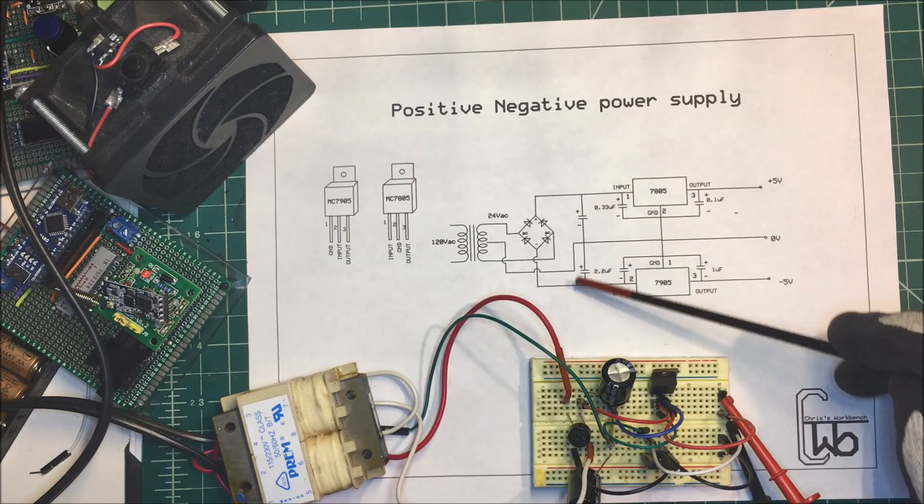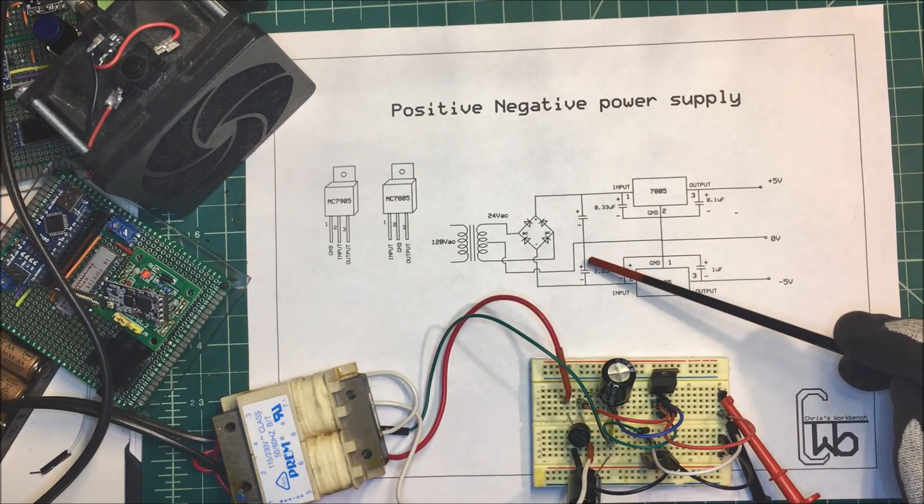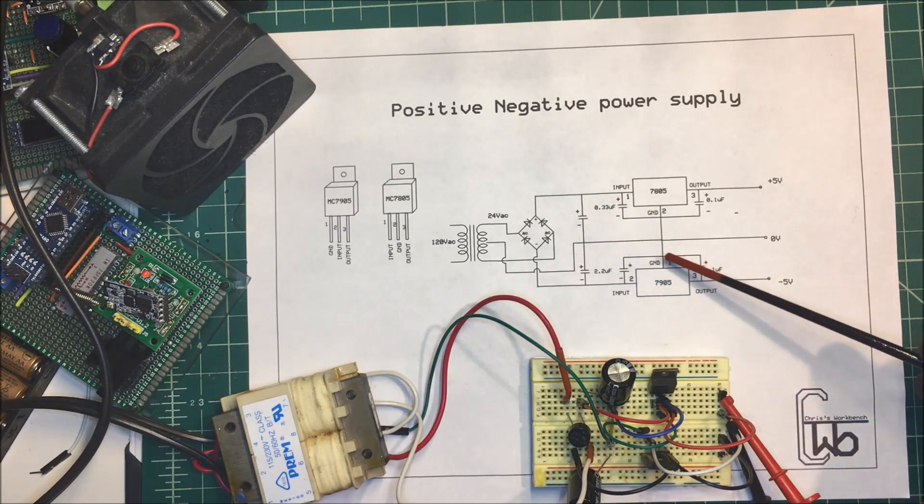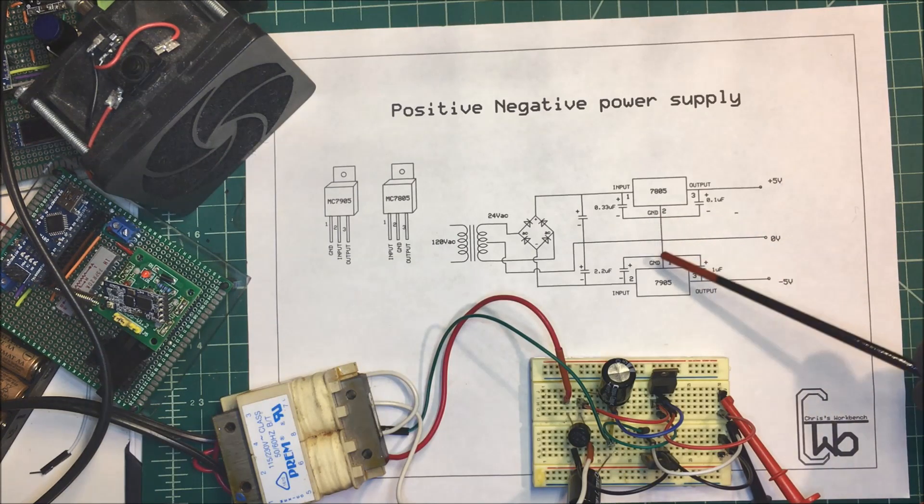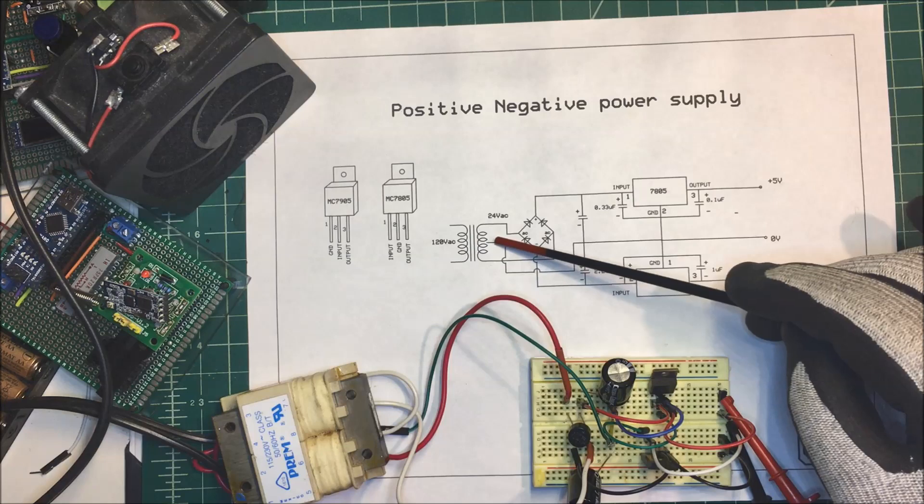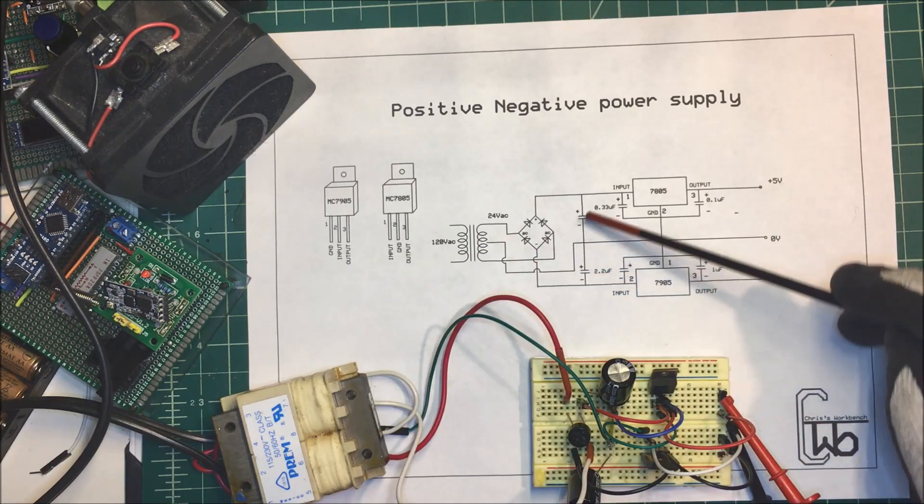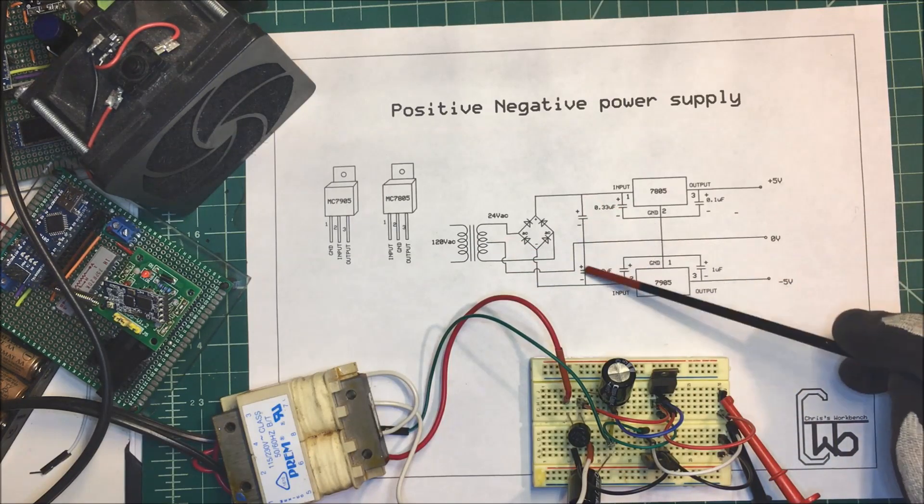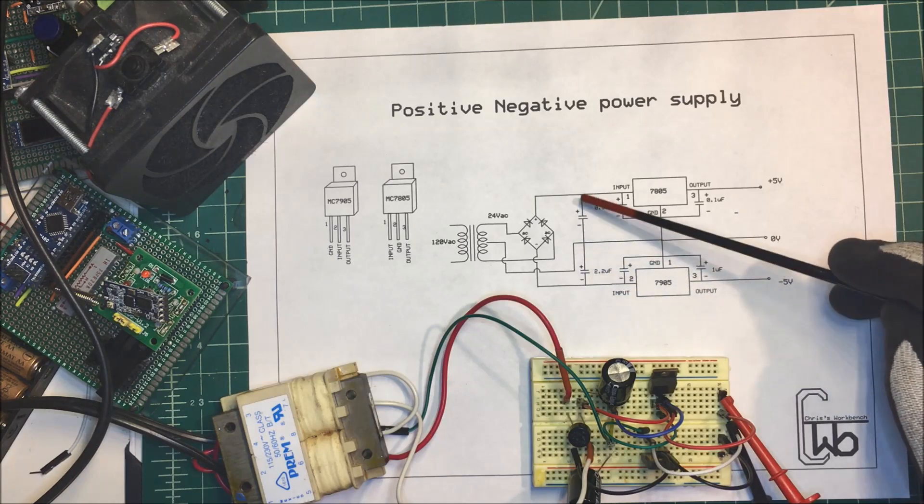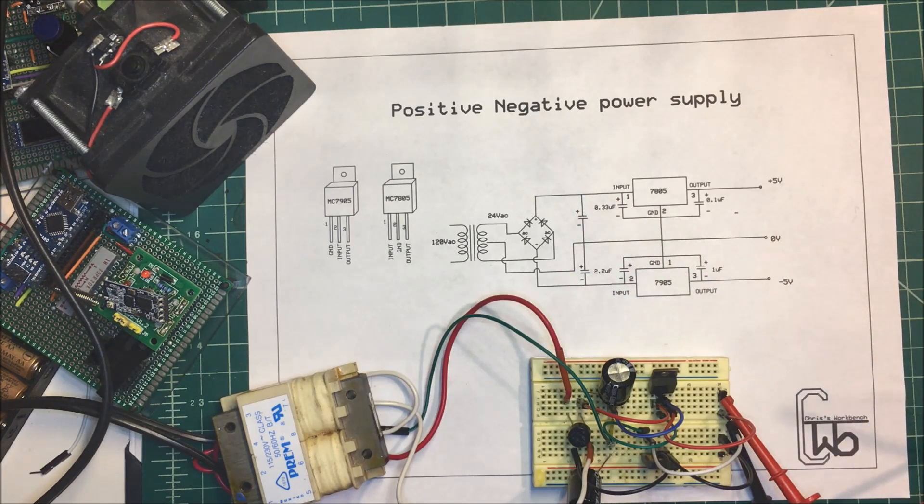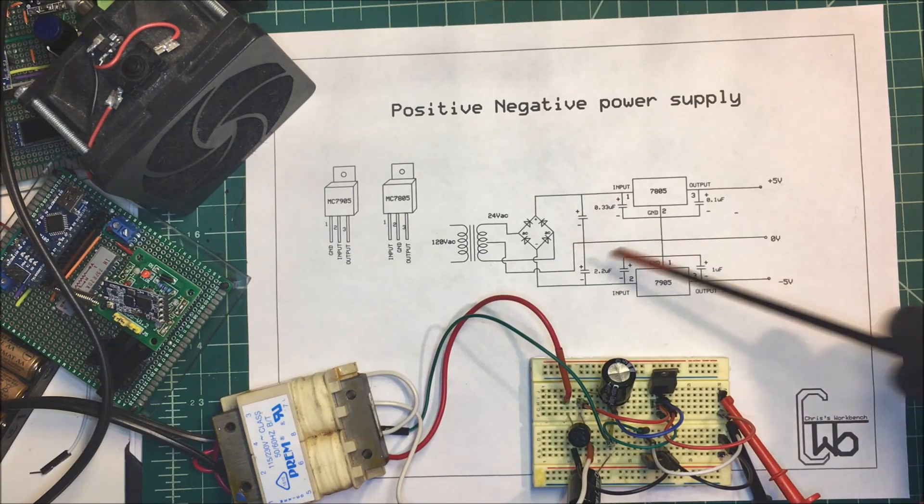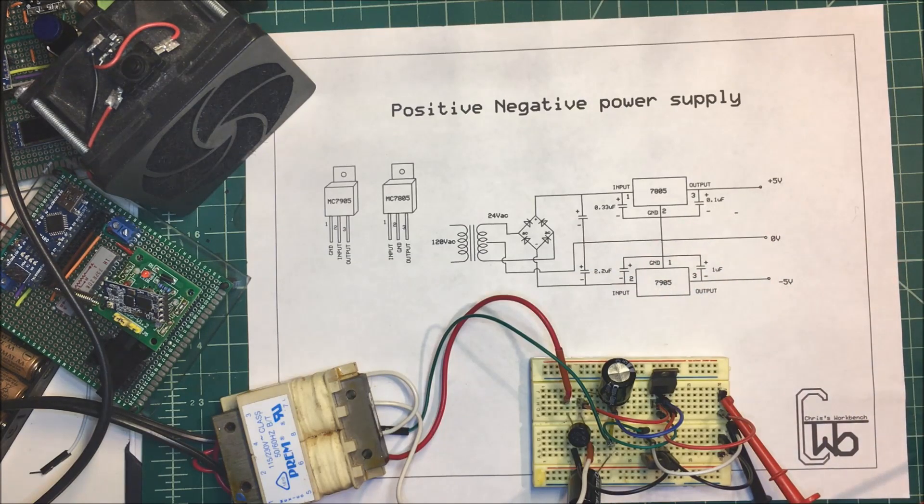So this is how we're getting our grounds—otherwise one has to be a negative ground, one has to be a positive ground. So we're center tapping the transformer, coming over to the center of these two capacitors that are tied to the positive and negative rail here. So we'll see if this thing actually works.